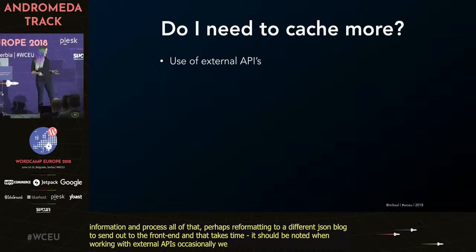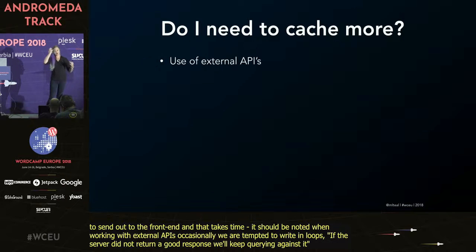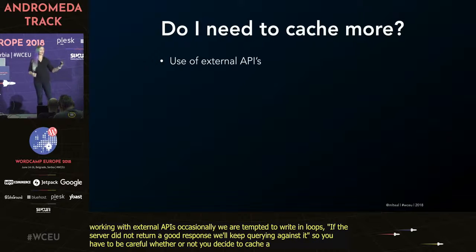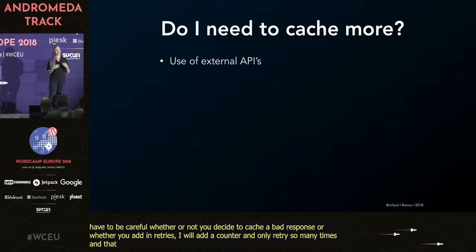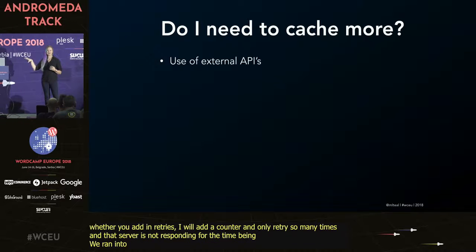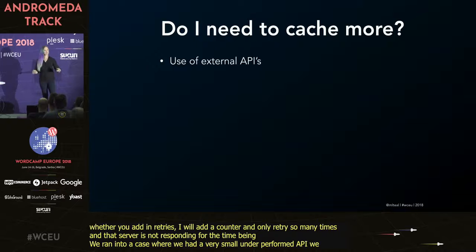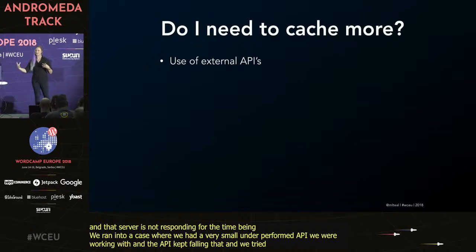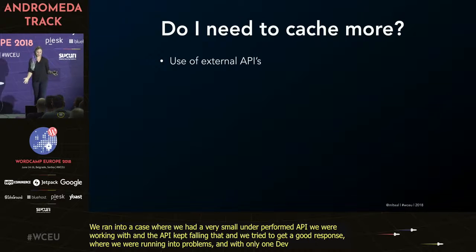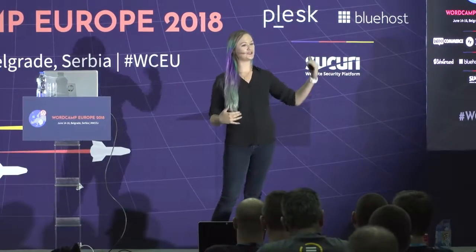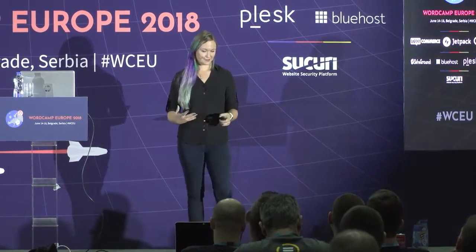The use of external APIs — at a previous job, we relied extremely heavily on an external API that collected all the post content from every site. You've got server-to-server handshake time creating milliseconds — depending on distance, that could be seconds. You've got time for that server to fetch its information and return it. When working with external APIs, we're sometimes tempted to write loops that keep querying if a server didn't return a good response. You've got to be careful — I'll add a counter and only retry so many times and then accept that the server isn't responding. We ran into a case where a small underpowered API fell down and we kept making queries, causing trouble on both ends.